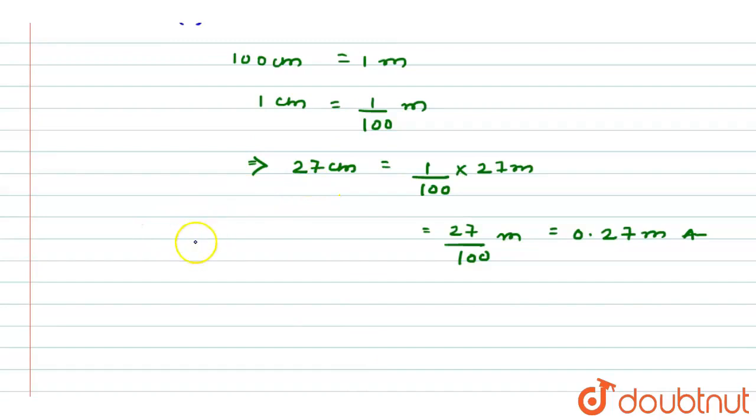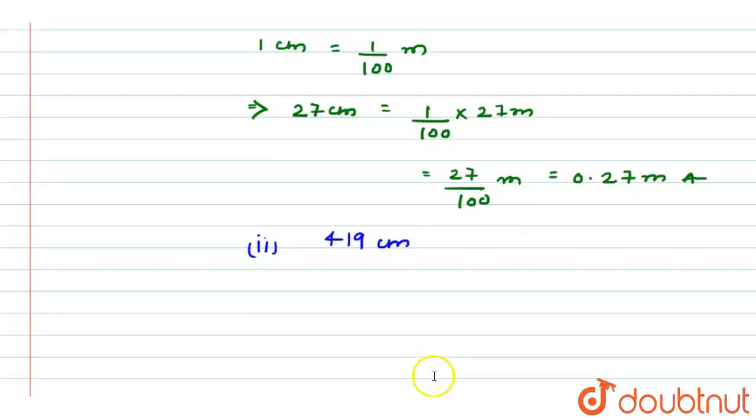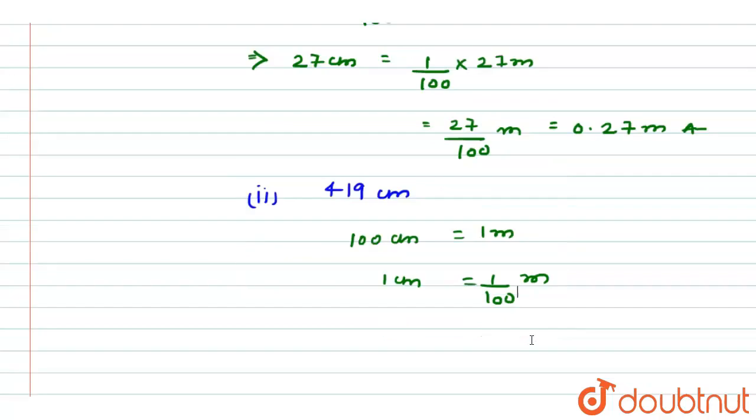Moving towards question number second. 419 cm. Just like the previous question, 100 cm is equal to 1 m. So from here, 419 cm is equal to 1 by 100 into 419 m.